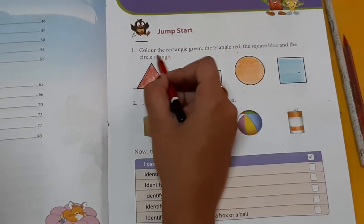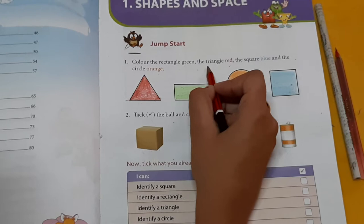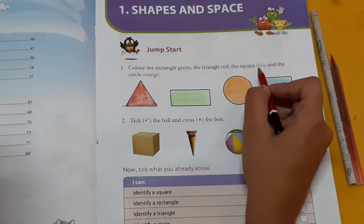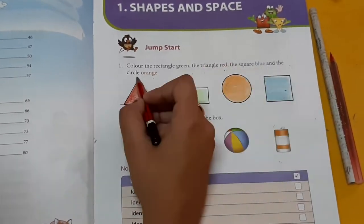First question. Color the rectangle green, the triangle red, the square blue and circle orange.